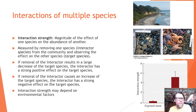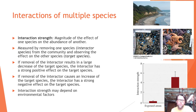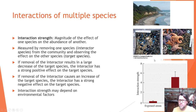Interaction strength is the magnitude of the effect of one species on the abundance of another, measured by removing the interactor species from the community and observing its effect on the target species. If removal results in a large decrease in the target species, the interactor has a strong positive effect. A study on the west coast examined whether interaction strength differed between wave-exposed and wave-protected areas where sea stars prey on mussels — the interaction strength was much greater in areas protected from waves, where sea stars were more efficient predators.